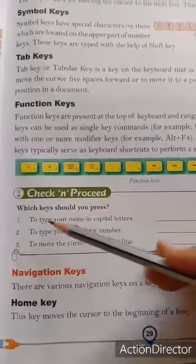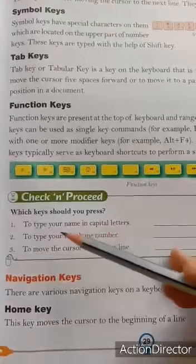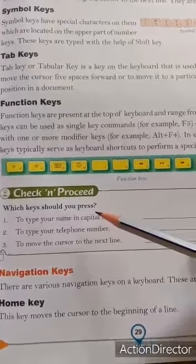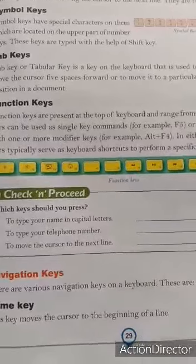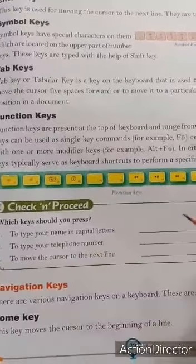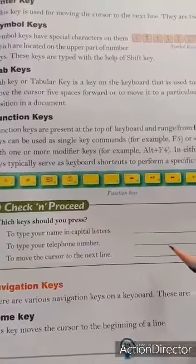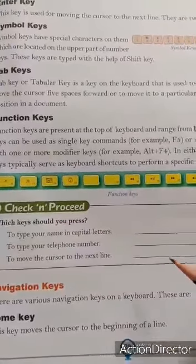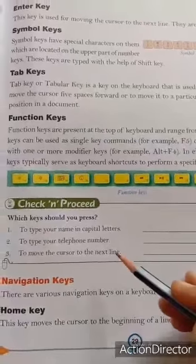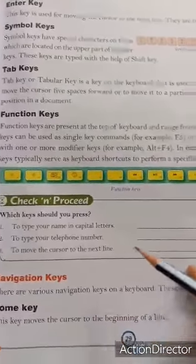Next is 'Check and Proceed' — which keys should you press? Number one: to type your name in capital letters, आपको अपना name capital letters में type करना है, तो Caps Lock key press करना चाहिए, because Caps Lock से सारे letters capital में type होंगे। Number two: to type your telephone number, then which key? Number keys, because telephone numbers are all digits। Number three: to move the cursor to the next line, cursor को next line में जाने के लिए Enter key press करते हैं।